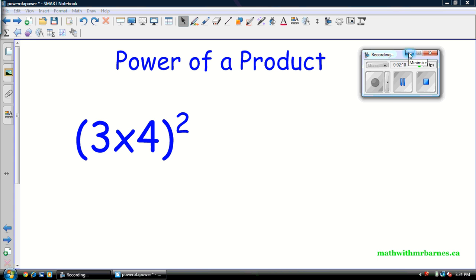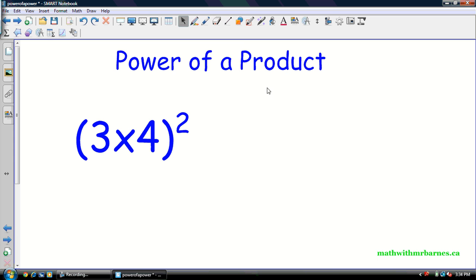All right, so next rule, next law: power of a product. So this one's a little different than the last one, just in the fact that instead of inside the brackets here having another power, you have basically a multiplication operation. So in this case, we have 3 times 4. So what we can in fact do for these is basically just distribute this power to each of the numbers inside. All right, so let me illustrate why.